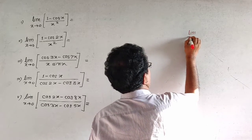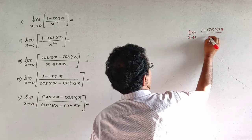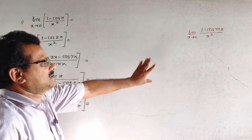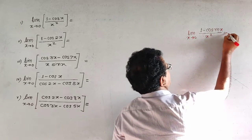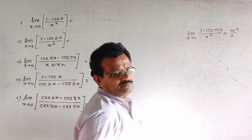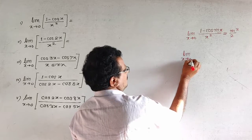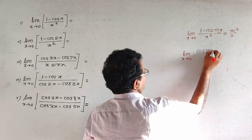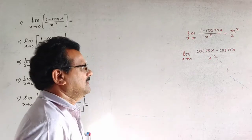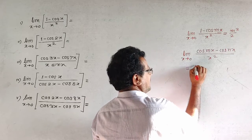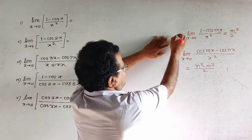Limit as x tends to 0 of (1 minus cos x) divided by x². The condition x times X divided by X squared gives the result N squared minus X squared divided by 2. This is formula number 1.